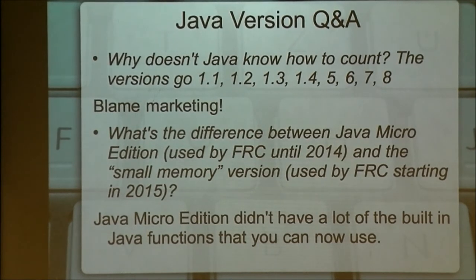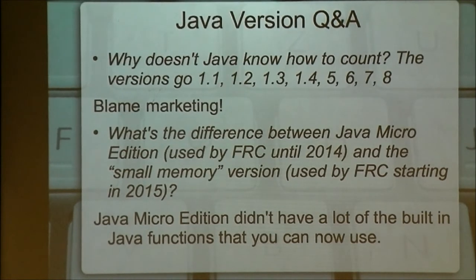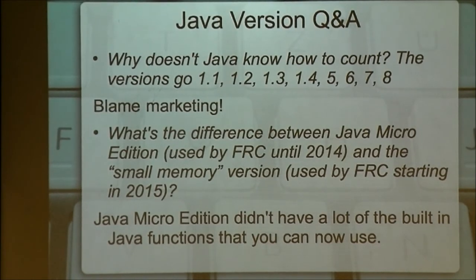What's the difference between Java Micro Edition that we've been using and the small memory version starting next year? Java Micro Edition is how they used to do Java for small devices — it had very few APIs and a very small memory footprint. Since then, cell phones and embedded devices got far larger so they moved away from that. At Championships they said we're going to be using the small memory footprint version of Java. I assume they meant the compact profile, which is the one that uses the least memory. I looked last night and the compact profile has everything you could possibly want to use — it leaves out things like databases and communicating with native programs that we'd never be doing on our robot anyway.